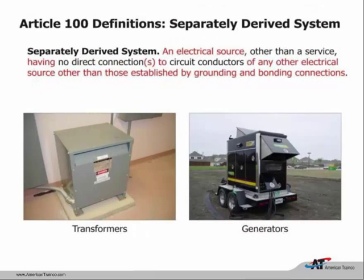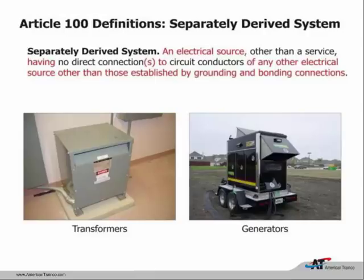Another definition they've refined is separately derived system. The most common example on the left is the transformer—no direct electrical connection from one source to another; it's all inductive. On the right is the generator, and when we get to Article 445, manufacturers of generators will have to indicate whether their generator is a separately derived system, meaning the neutral is bonded to the generator and its frame. We also have to be careful looking at transfer switches—a separately derived system would require a four-pole transfer switch to transfer the neutral along with the ungrounded conductors.